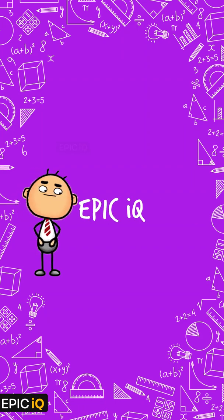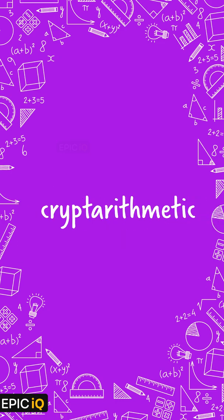Hello everyone. This is EpicIQ and in this video, I am going to discuss two relatively simple cryptarithmetic problems. The first problem goes like this: the number xyz is equal to the sum of the factorials of x, y, and z.